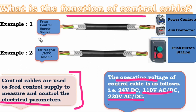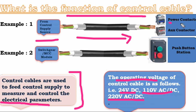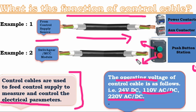In example one, the control supply is available at the source — it may be 24V DC, 110V DC, or 220V DC — and it is transmitted through the control cable to act on the power contactor or auxiliary contactor. In example two, the control supply is available at the push button station. The green push button indicates starting the motor or switchgear elements, and the red push button indicates stopping the motor. The control supply is transmitted from the push button station to the switchgear or motor control module.